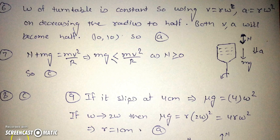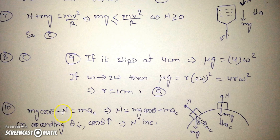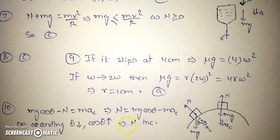A motorcycle goes over a bridge of radius r. The driver maintains constant speed. This is a non-intuitive question most students get wrong. At any general position on the overbridge, mg·cosθ minus N provides the centripetal force: N = mg·cosθ − mv²/r. On ascending, θ decreases, so cosθ increases, meaning the normal force increases. However, it remains less than mg throughout.